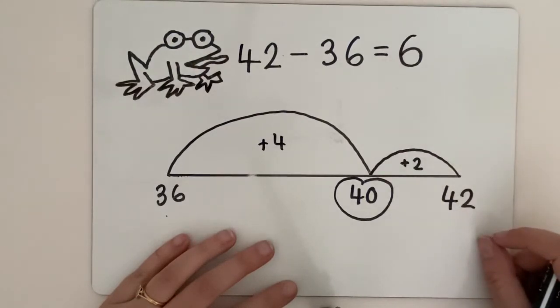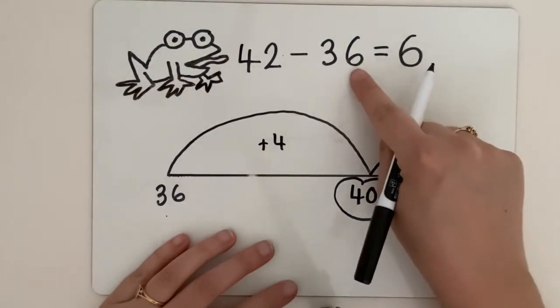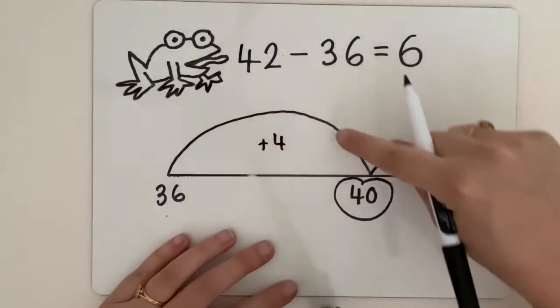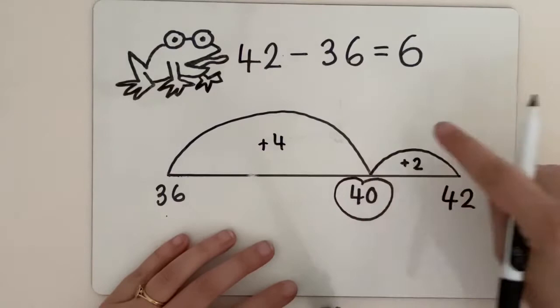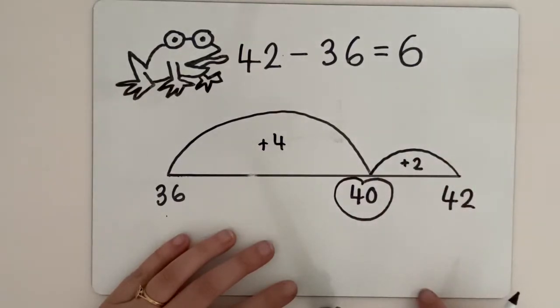It's quite straightforward. Remember, you start at the smaller number and then you jump up. See if you can find the next big fat round 10 and then you jump on again. Let's have a look at another example.